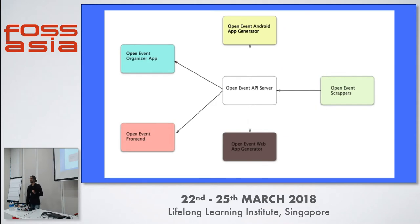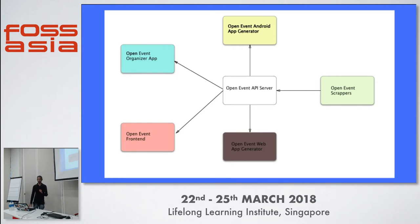Following the decoupling discussed earlier, we have an Android generator which lets you generate an Android application for your events, a web app — the schedule app you might have used on the website — the Open Event front end which is the front end of the new decoupled API server, and the Organizer app, an Android app which lets organizers manage events in real time.